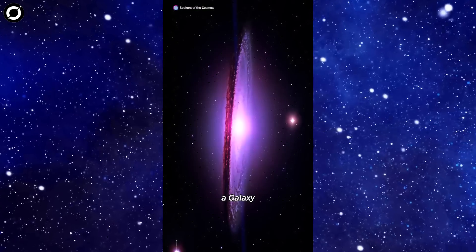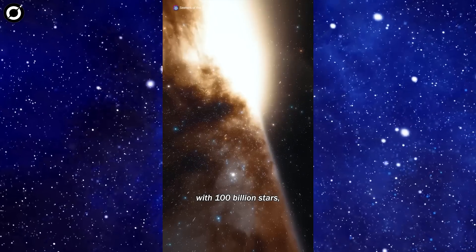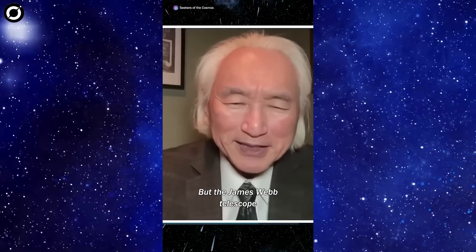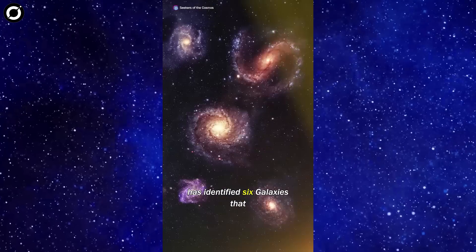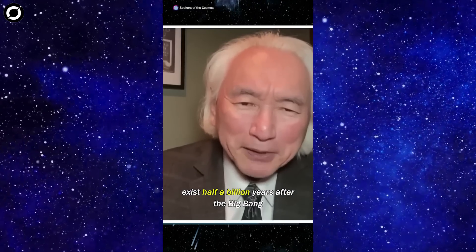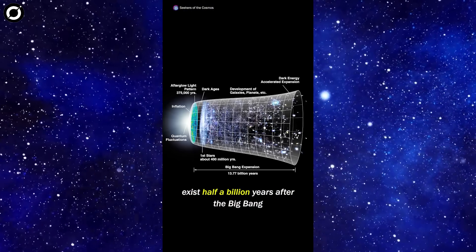Now it takes many billions of years to create a galaxy like the Milky Way with 100 billion stars. But the James Webb telescope has identified six galaxies that exist half a billion years after the Big Bang that are up to ten times bigger than the Milky Way galaxy.